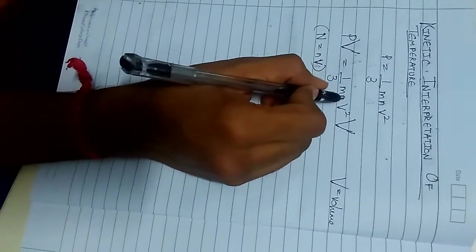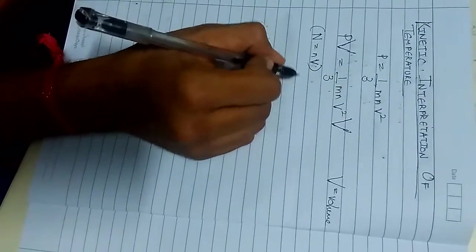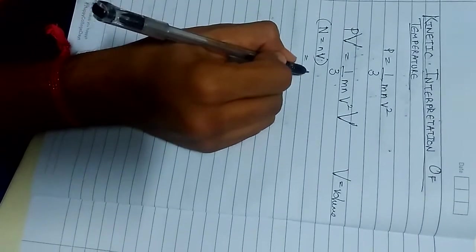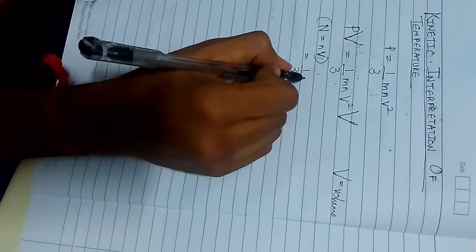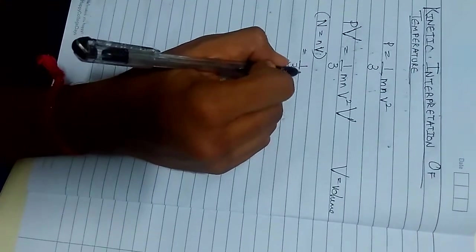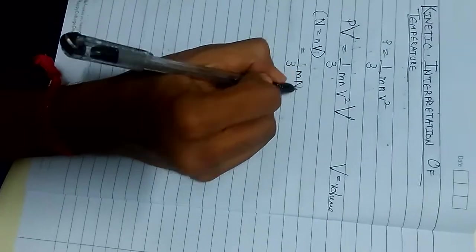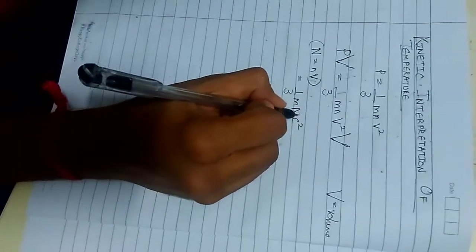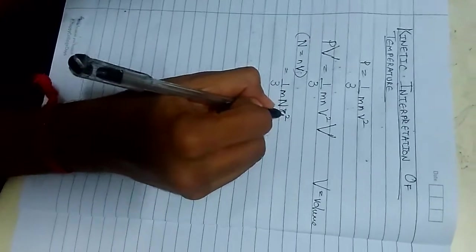So we can replace this n and v by capital N. As there are n number of molecules with volume v. 1 by 3 m capital N v square.